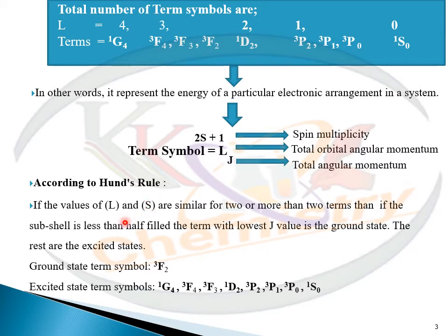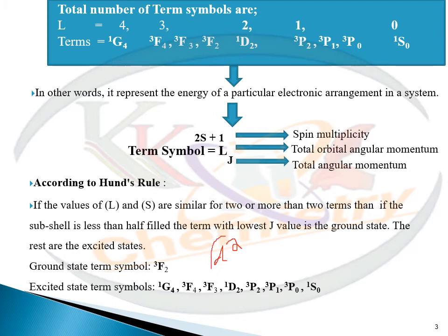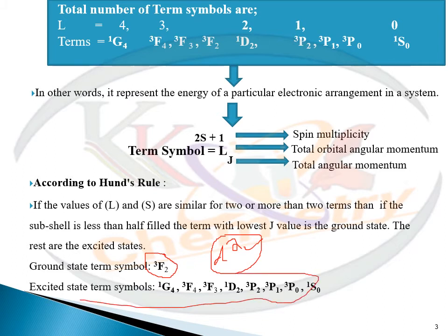According to Hund's rule, the lowest energy term symbol is the one having high spin multiplicity, high L value, and lower J value when the orbital is less than half-filled. Here the d² system has an orbital less than half-filled, so ³F₂ will be the ground state term symbol and the rest will be excited ones.